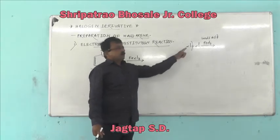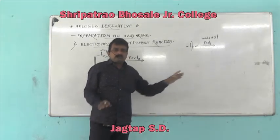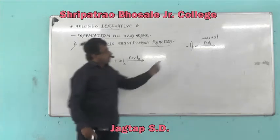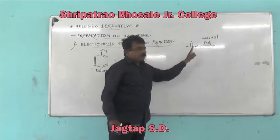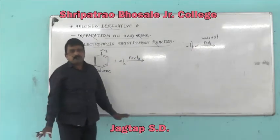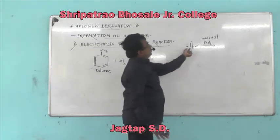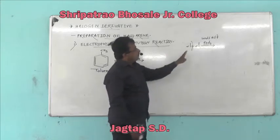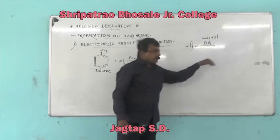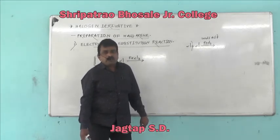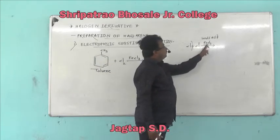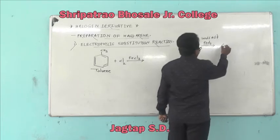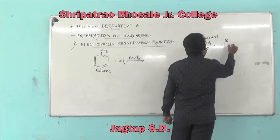Heterolytic bond fissure means the breaking of a bond takes place in such a way that any one of the partners retains both the shared electrons. In the presence of Lewis acid FeCl₃, any one partner retains both shared electrons. That is, the breaking of the Cl–Cl single covalent bond takes place heterolytically. Heterolytic bond fissure produces an electrophile and a nucleophile.